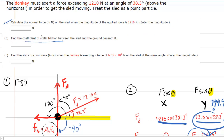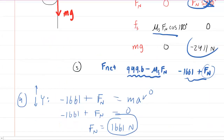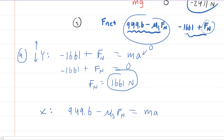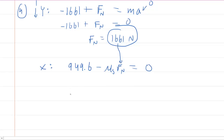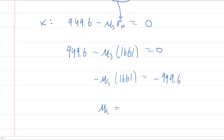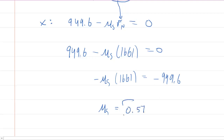For part B, we need to find the coefficient of static friction, mu_s. We turn to the x direction: 949.6 minus mu_s·Fn equals Ma. Since the sled is not accelerating in the x direction, Ma equals zero. We can now substitute Fn equals 1,661 newtons. Solving: subtract 949.6 from both sides to get negative 949.6, then divide both sides by negative 1,661. This gives mu_s approximately equal to 0.57, which is the correct answer to part B.